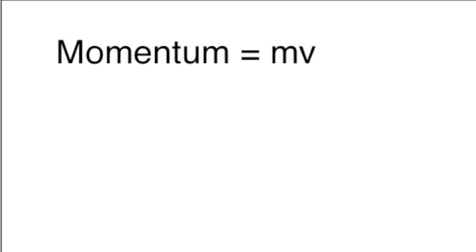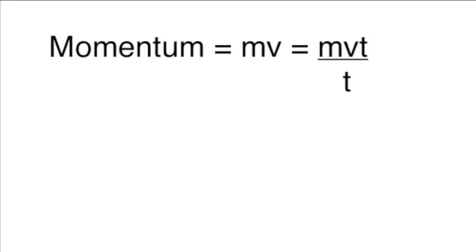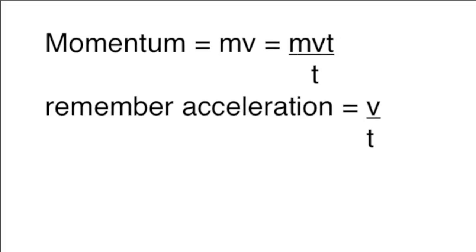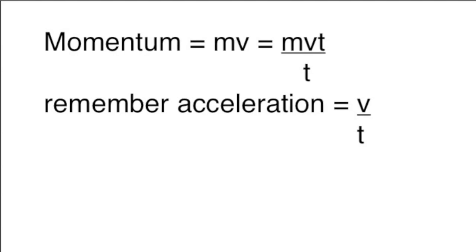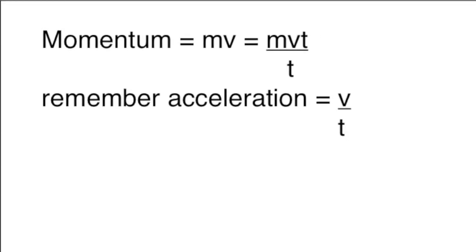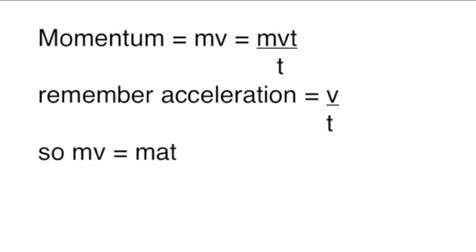Know that momentum is equal to mass times velocity. If we multiply both the top and bottom of that expression by time T, then recalling that acceleration is velocity divided by time, you can rewrite the expression as mass times acceleration times time.